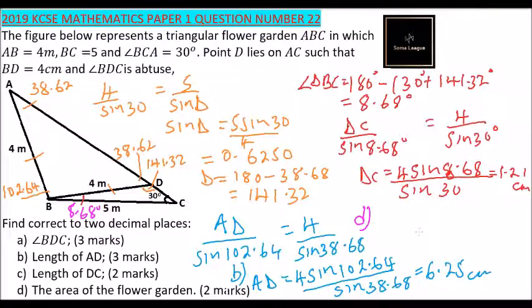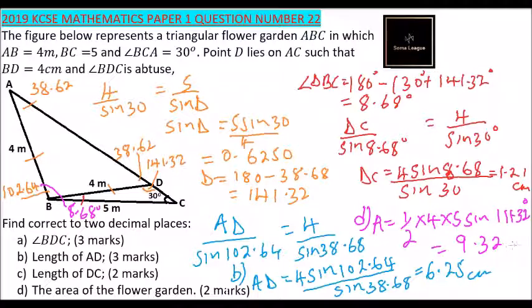Area equals one-half times 4 times 5 times sine of 111.32. That is the combination of the whole angle here. When you compute that using the calculator, you will get 9.32 cm squared. That is how you work out that question. I hope you have been able to follow.